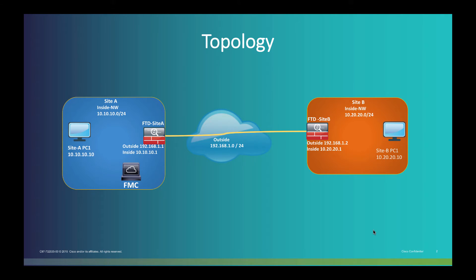I'm going to use this topology for this Site-to-Site VPN demo. In this topology, we have two sites — Site-A and Site-B — with FTD on both locations. We have Firepower Management Center at Site-A to manage both FTDs. We will see the minimal configuration required to establish IPsec Site-to-Site VPN between two FTDs to protect traffic between 10.10.10.0 and 10.20.20.0 networks.